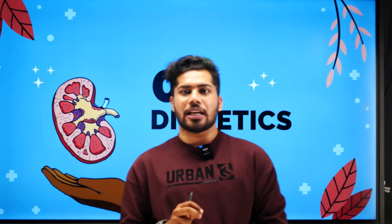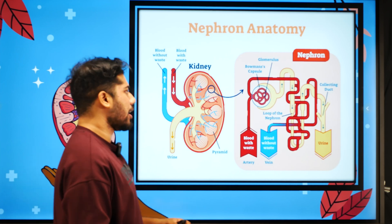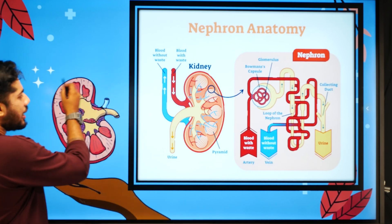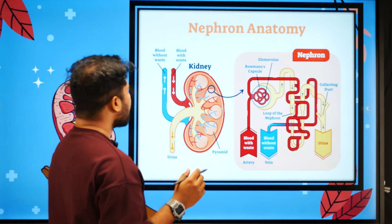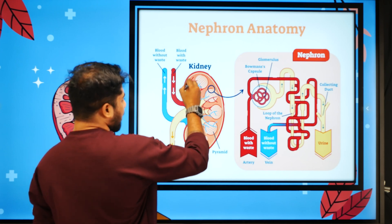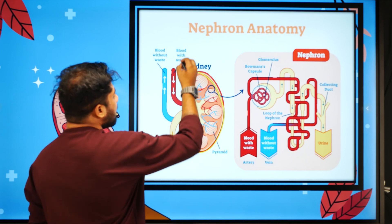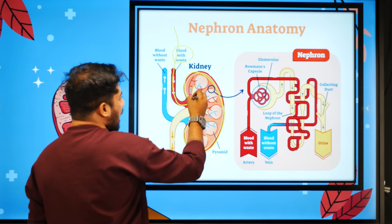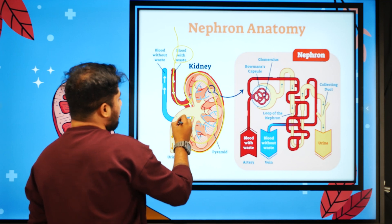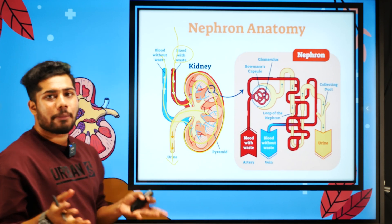We will talk about diuretics and nephron anatomy. We will talk about the nephrons and the kidney. The kidney is about 11cm in size. We will talk about blood with waste and the normal kidney mechanism — how filtration works.